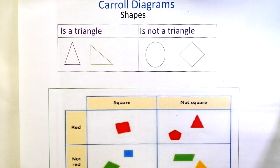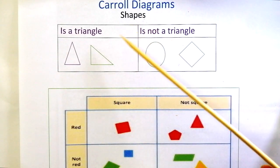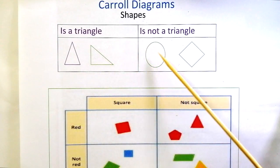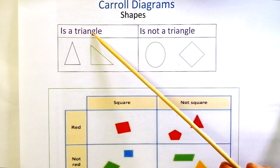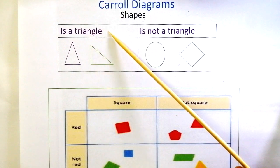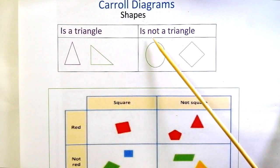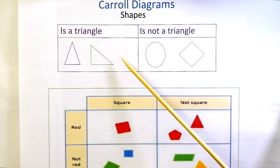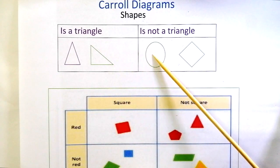Let's see these Carroll diagrams. The first one is about shapes, in which we have sorted different shapes. The first label says that it's a triangle, so the other box or the other group is a shape which is not a triangle. This is done with one sorting rule.